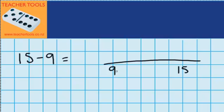I think to myself, this question could be a lot easier if this number here was actually a tidy number. Let's say it was 10. Now to change it into 10, I've made the 9 one bigger. But here's the problem — you can see that the distance between the 9 and the 15 is not the same as the distance between the 10 and the 15. The distance is now shorter.